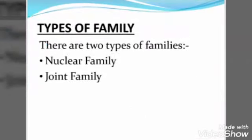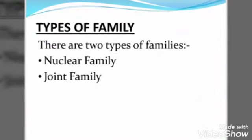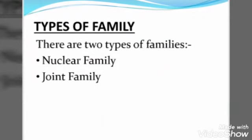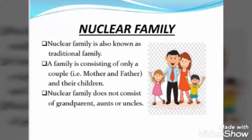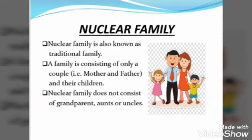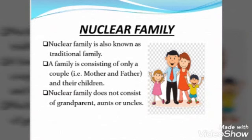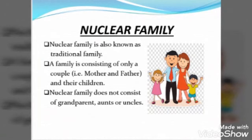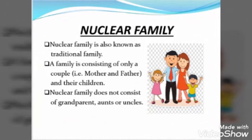There are two types of family. First is nuclear family and the second one is joint family. Now we know about nuclear family. Nuclear family kya hoti hai? Nuclear family is also known as traditional family. Nuclear family ko traditional family bhi kaha jata hai. Traditional means a family consisting of only a couple — that is mother and father — and their children. Nuclear family means jahaan peh father, mother hon aur wohi apne children ke saath rahe, ek hi ghar mein, usi ko nuclear family kaha jata hai.